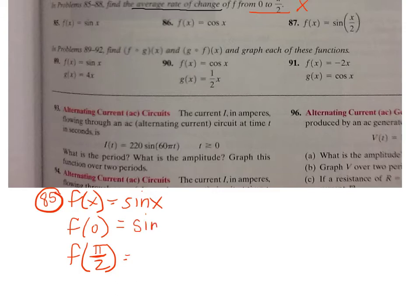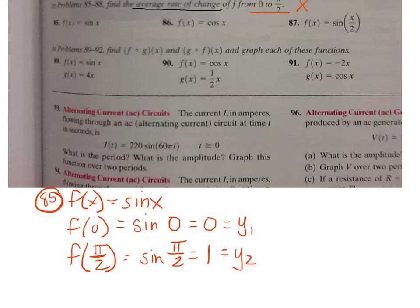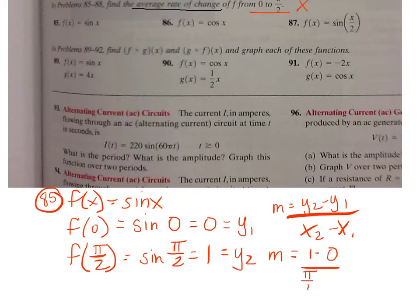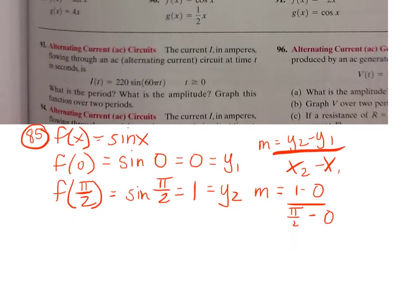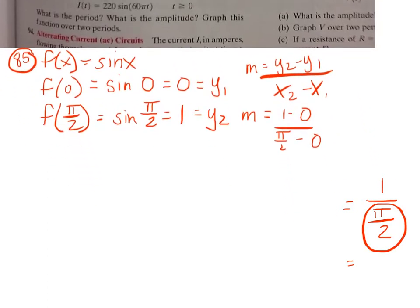Sine 0 is 0 and sine pi/2 is 1, using our x-y-r unit circle values. Think of these as y-coordinates y1 and y2, and the x-values as x1 and x2. Using the slope formula from algebra 1: (y2 - y1)/(x2 - x1), I plug in my points to get 1 over (pi/2). Dividing by a fraction means multiplying by the reciprocal, so the average rate of change is 2/pi.